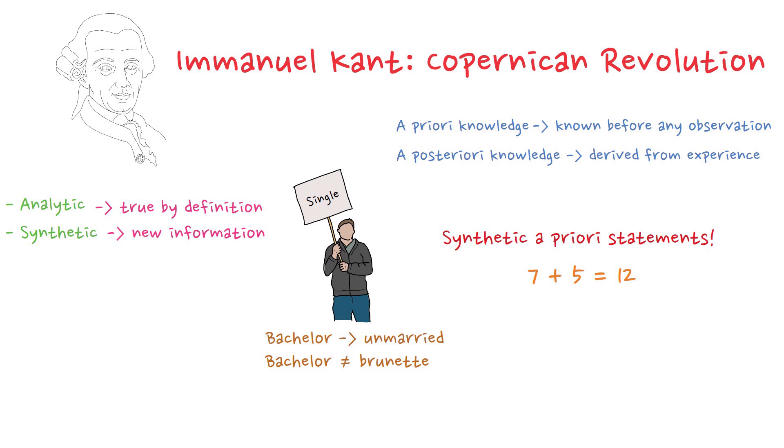This is why Kant saw mathematics as an example of synthetic a priori knowledge. It expands our understanding, but is still necessarily true independent of experience.